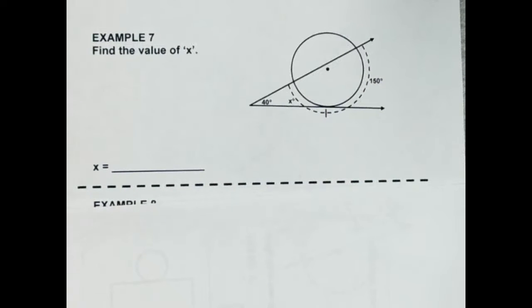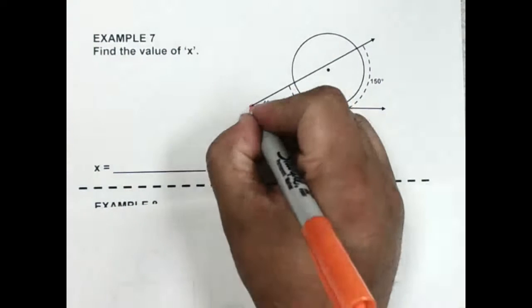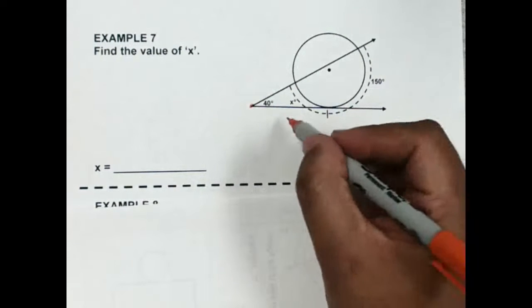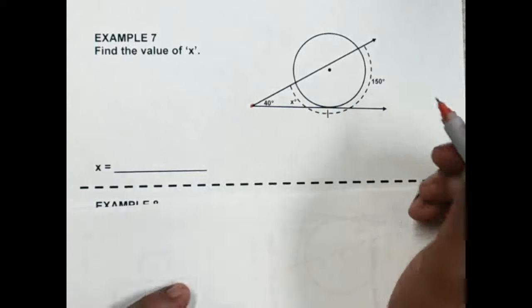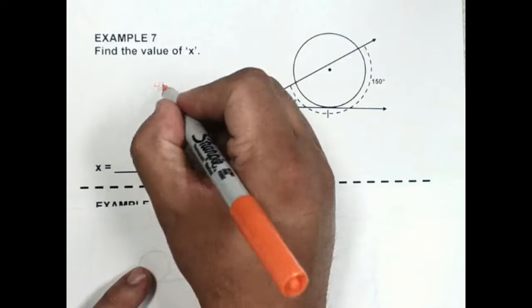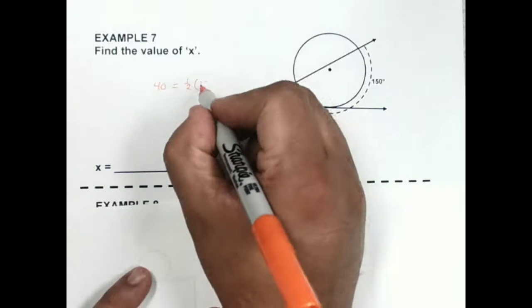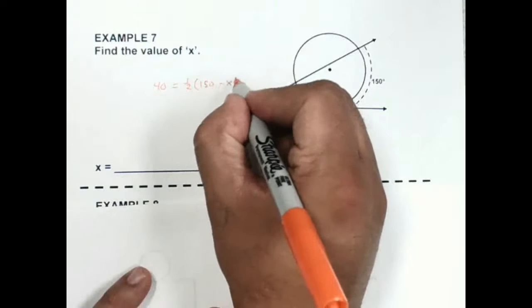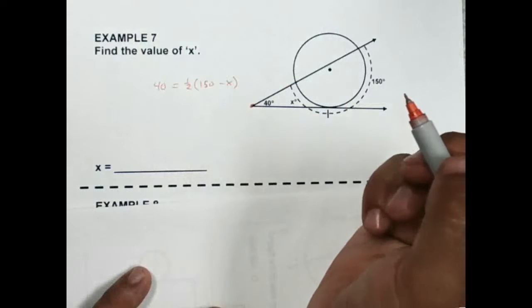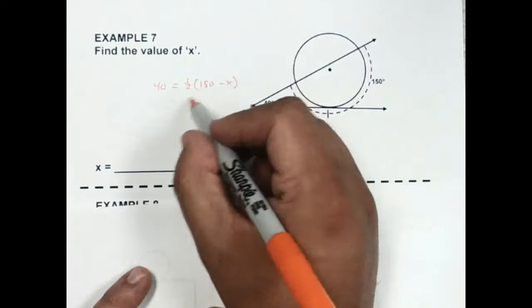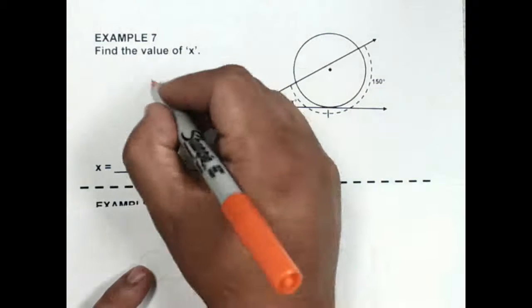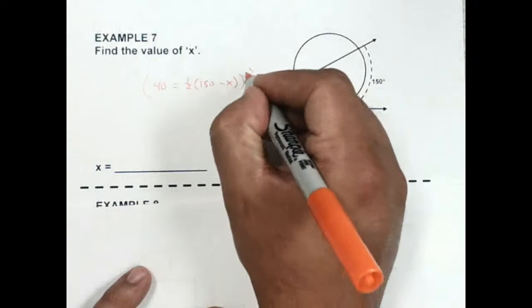All right, let's look at number seven. Again, this is an exterior angle because the vertex is on the outside of the circle. So that means that angle is equal to half the larger arc minus the smaller arc. All right, again, to get rid of this half, I'm going to have to double both sides. This will be times two.